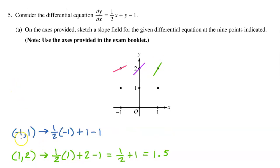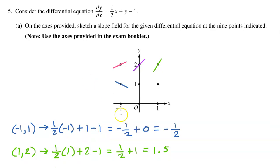At the point (-1, 1), we have one-half times negative 1 plus 1 minus 1. This is negative one-half plus zero, which equals negative one-half. So draw a decreasing slope, but not as steep as a 45-degree angle.